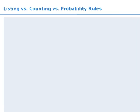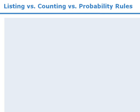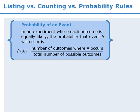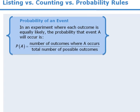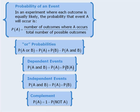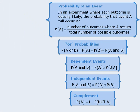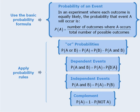In this lesson, we're going to look at some of the options we have when solving probability questions. At the beginning of this module, we examined the basic probability formula and found that we could combine it with basic listing or counting techniques to solve many questions. Later, we added more sophisticated formulas to handle more complex questions. These tools boil down to two options: you can use the basic probability formula, or you can apply one or more of the probability rules.